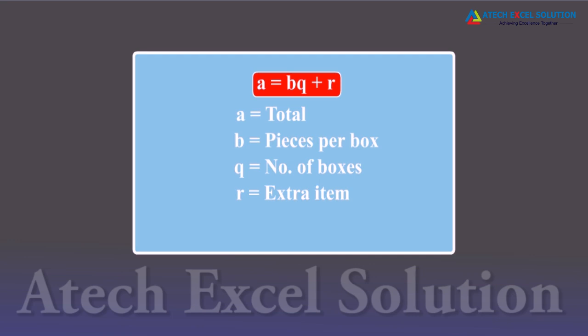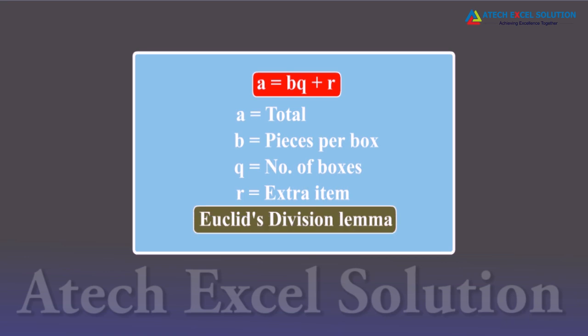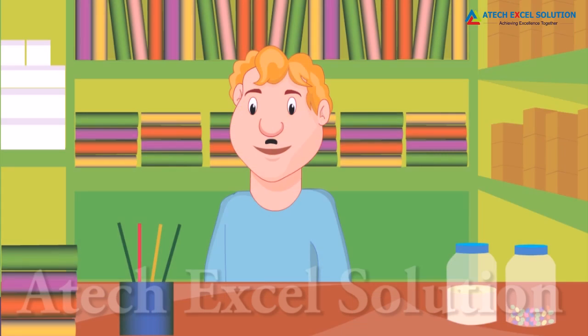The relation a = bq + r is Euclid's Division Lemma. Now if the stationary man wants to arrange boxes of pencils and boxes of erasers in the least number of shelves, such that pencils are equally divided across all shelves and erasers are also equally divided across all shelves.